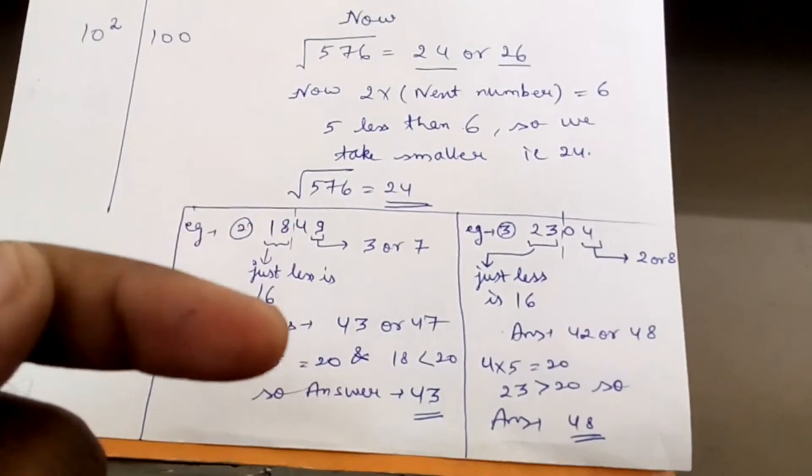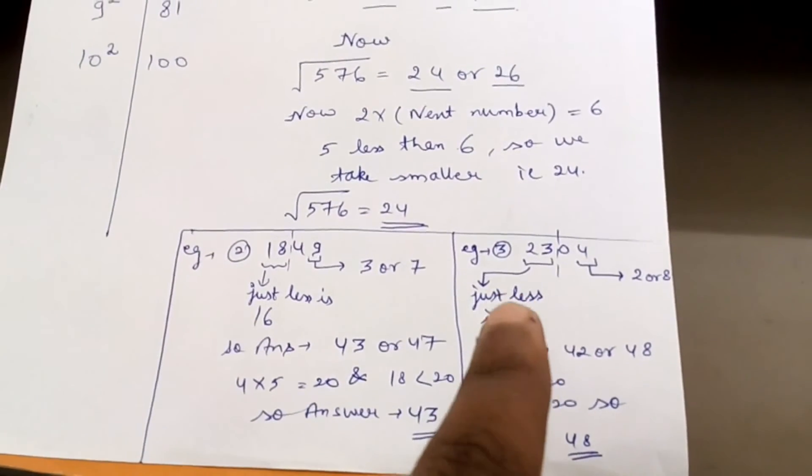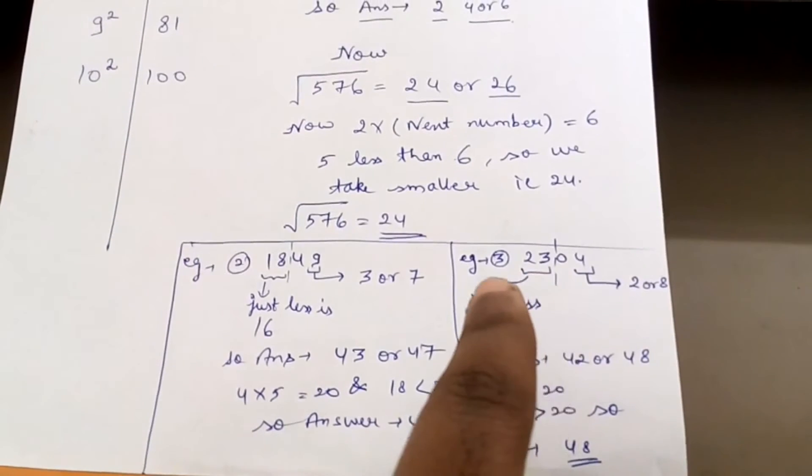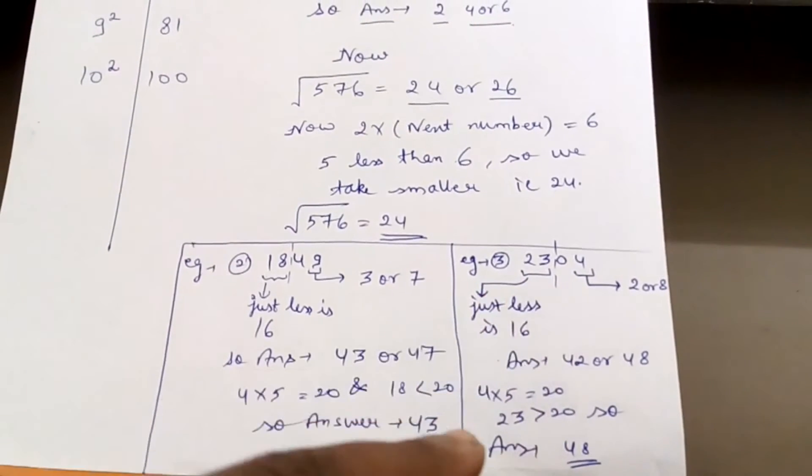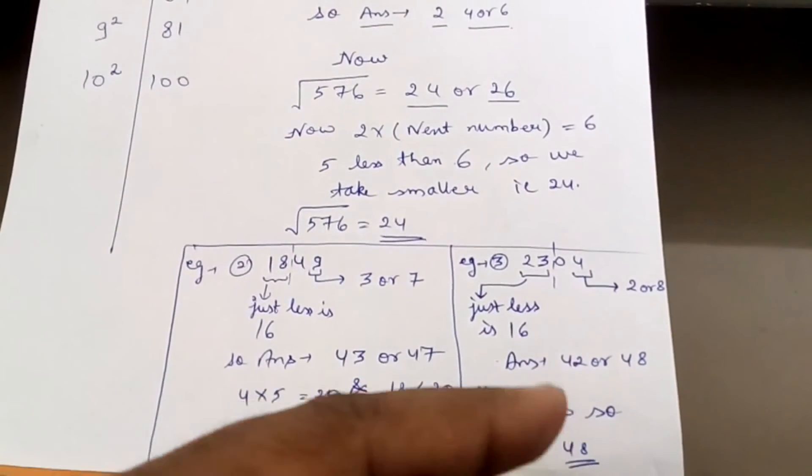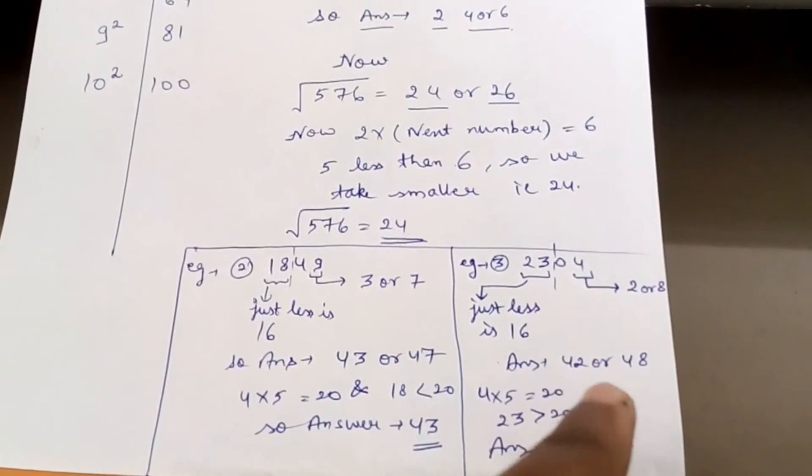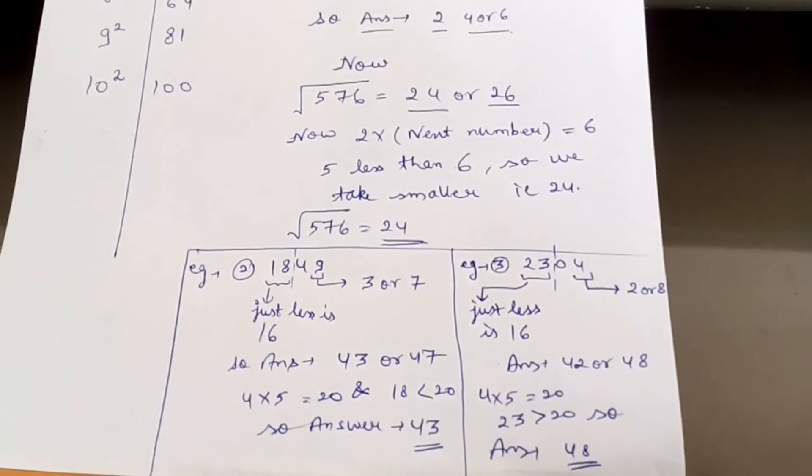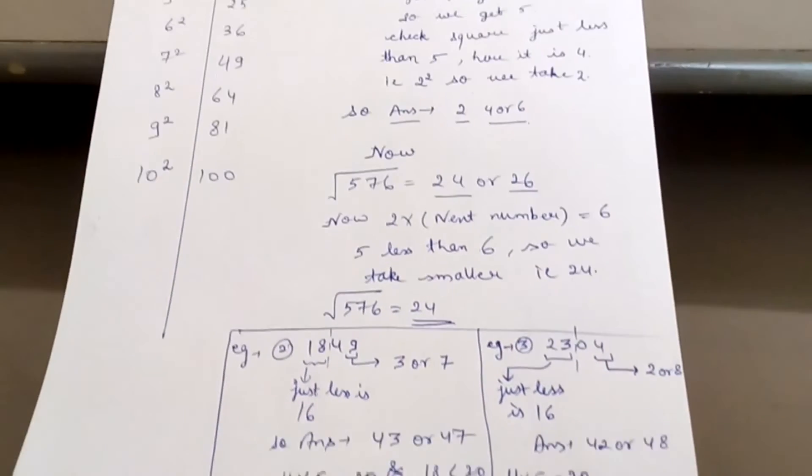But our 23 was greater than 20, so we will take higher of 42 and 48. So our answer will be 48. I hope you guys understood and you found this trick helpful.